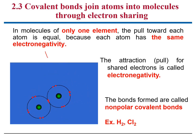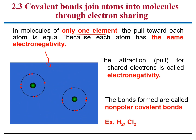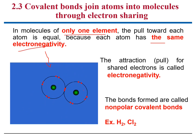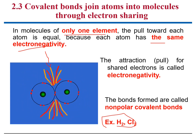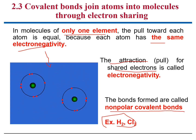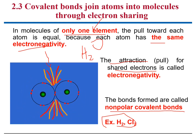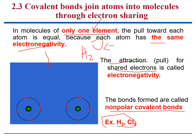Here I show you an example of a covalent bond. Just to remind you, in covalent bonds in molecules that are only one element, both atoms have the same electronegativity. Remember that electronegativity is the attraction or the pull of shared electrons. In these two cases — hydrogen and oxygen molecules — these are considered non-polar covalent bonds. However, water is completely different. It's not one element, it's two.